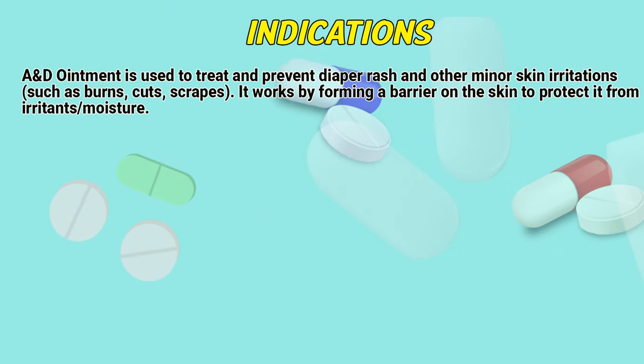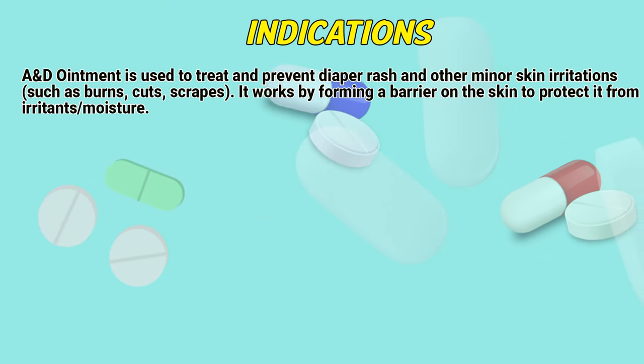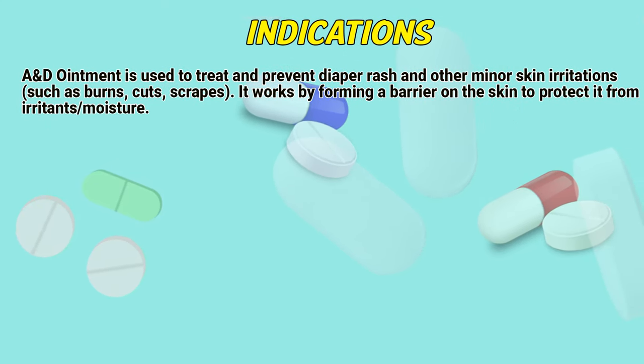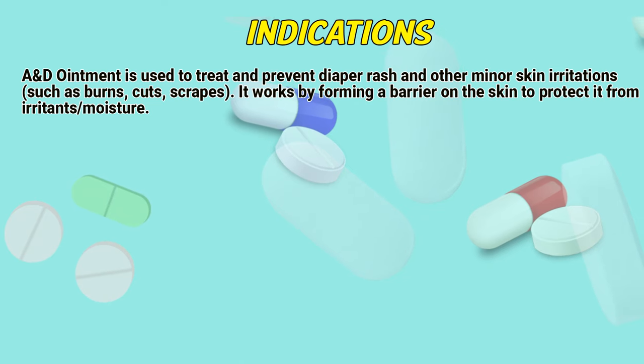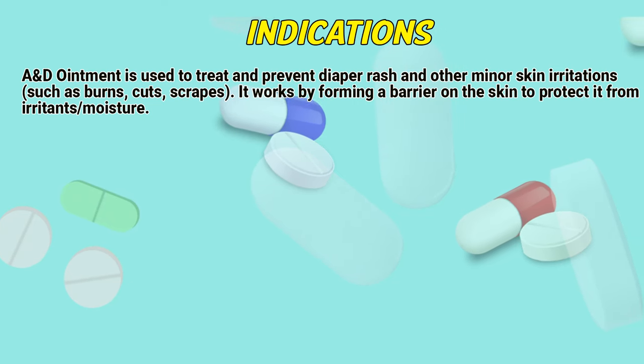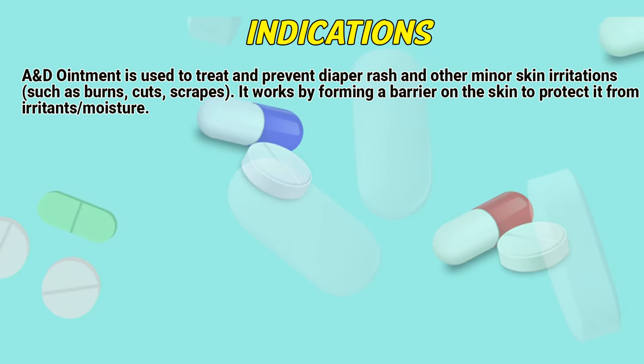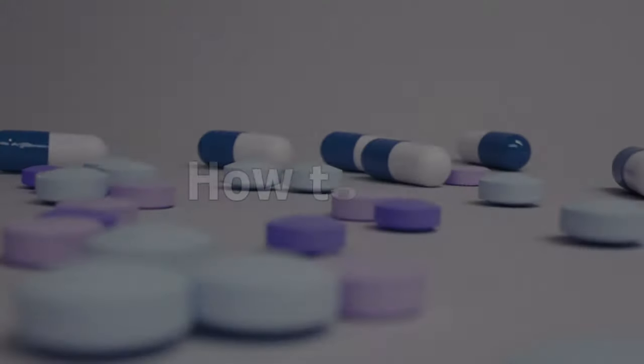Indications: A&D ointment is used to treat and prevent diaper rash and other minor skin irritations, such as burns, cuts, and scrapes. It works by forming a barrier on the skin to protect it from irritants and to moisturize.